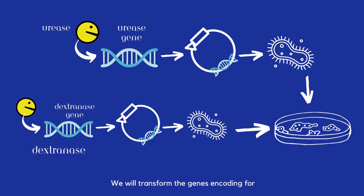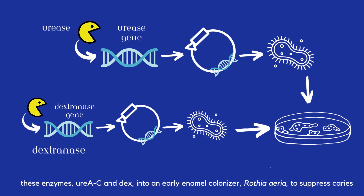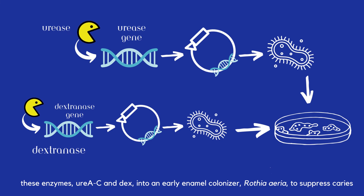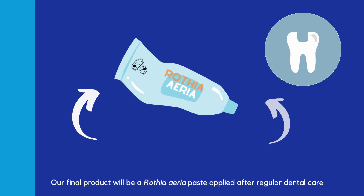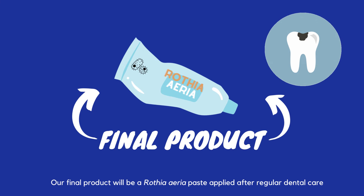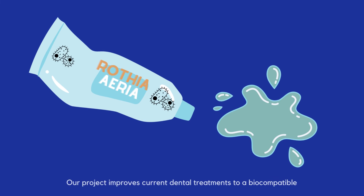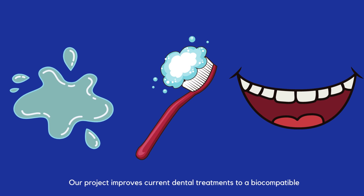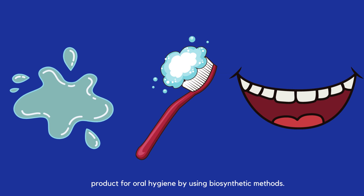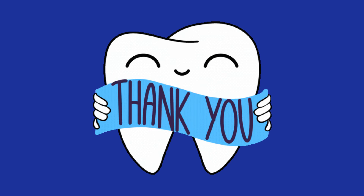We will transform the genes encoding these enzymes, urease A through C and dex, into an early enamel colonizer, Rothia aria, to suppress caries. Our final product will be a Rothia aria paste applied after regular dental care to inhibit the development of dental caries. Our project improves current dental treatment to a biocompatible product for oral hygiene by using biosynthetic methods.